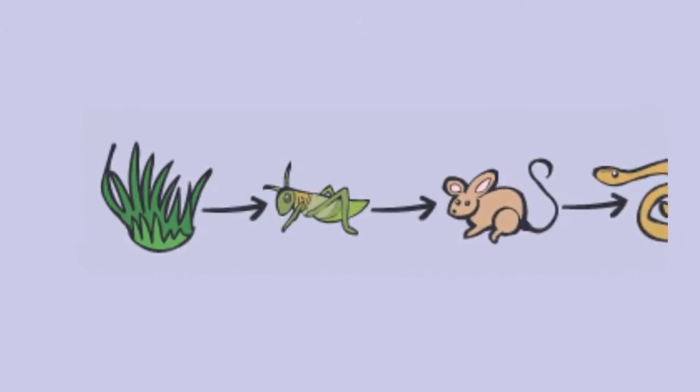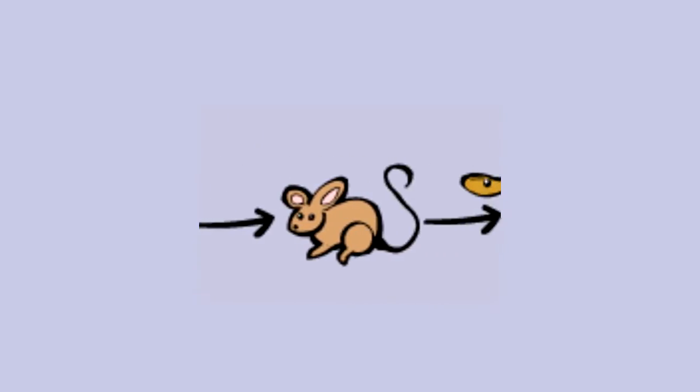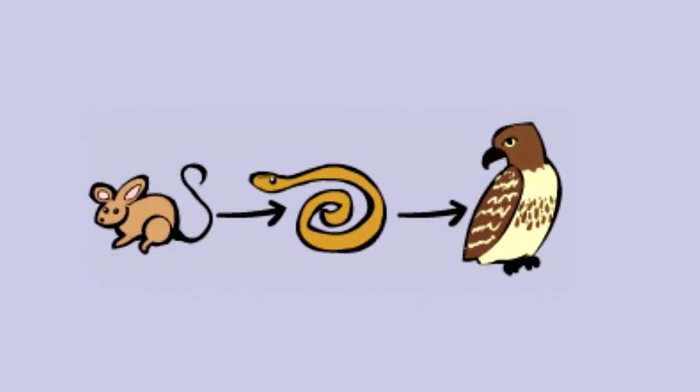The food chain shows how organisms are related in the habitat. For example, in this food chain, the grasshoppers consume the plants, the mice eat the grasshoppers, then the snakes eat the mice, and finally the eagles are the consumers that eat the snakes. So the producers make their own food, and these consumers come and consume the producers, and after that they will eat each other one by one to create a food chain.